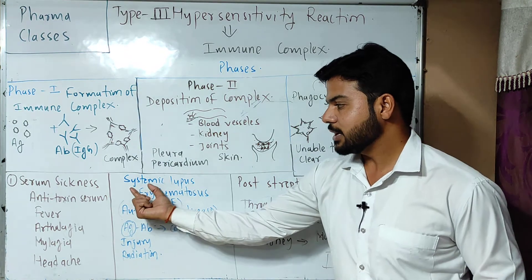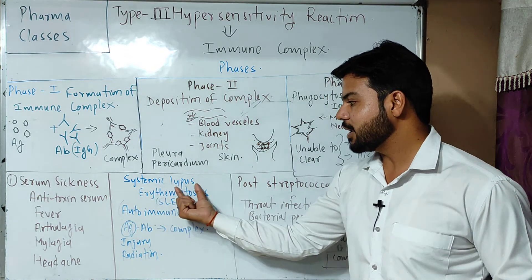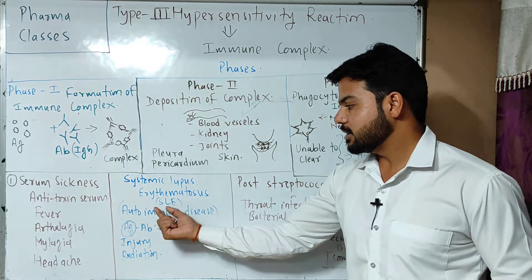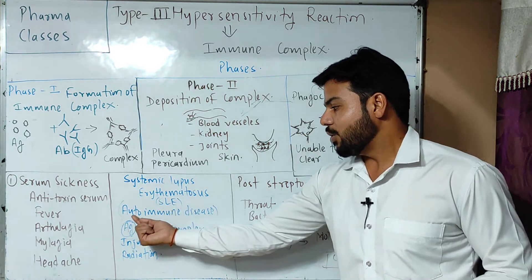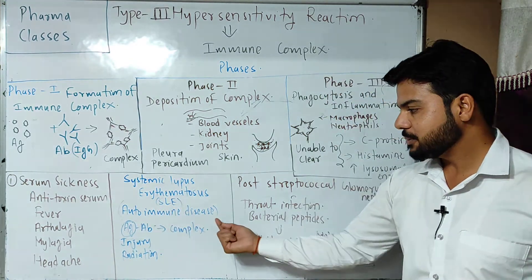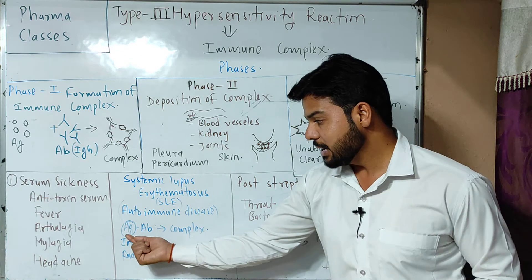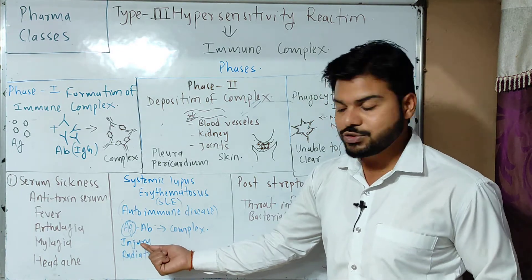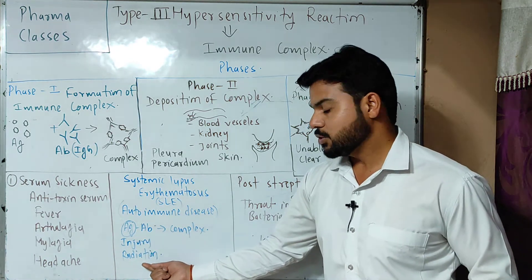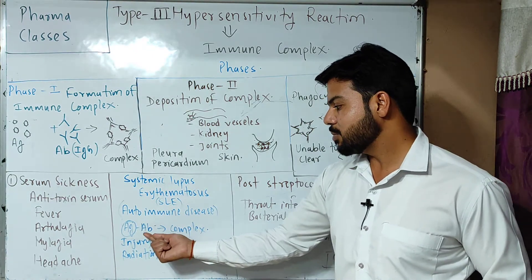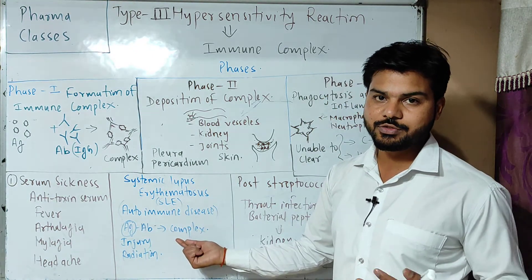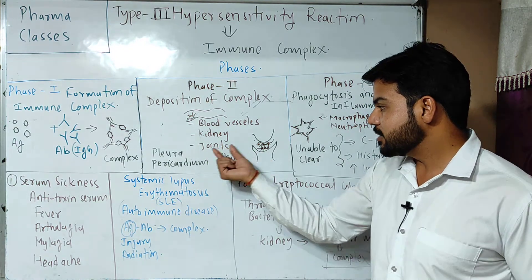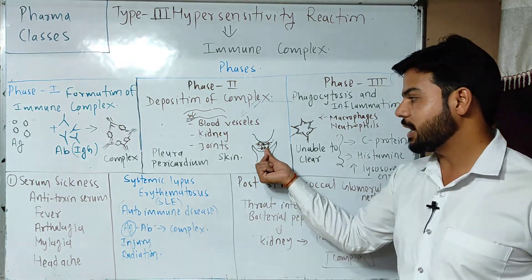Another disease associated with type 3 hypersensitivity is systemic lupus erythematosus, which we call SLE — an autoimmune disease. Due to some injury or radiation, endogenous antigens form antigen-antibody complexes that are deposited in different joints and in synovial fluid sites.